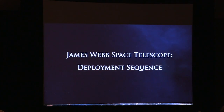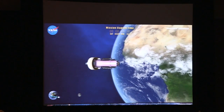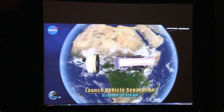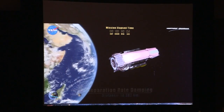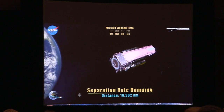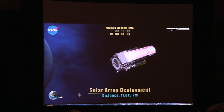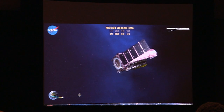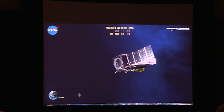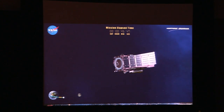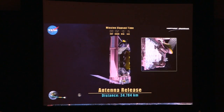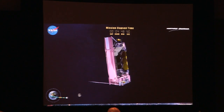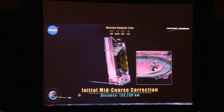Walking through the deployment sequence: launch vehicle separation occurs, followed by initial rate damping. Just 30 minutes after launch, we're already doing our first deployment — getting the solar panel out to start getting power to the system. We then do attitude adjustments and release the communications antenna — but don't deploy it yet. Then straight after that, we do our first burn to L2, called Mid-Course Correction 1A, the most important of the burns we do post-launch.